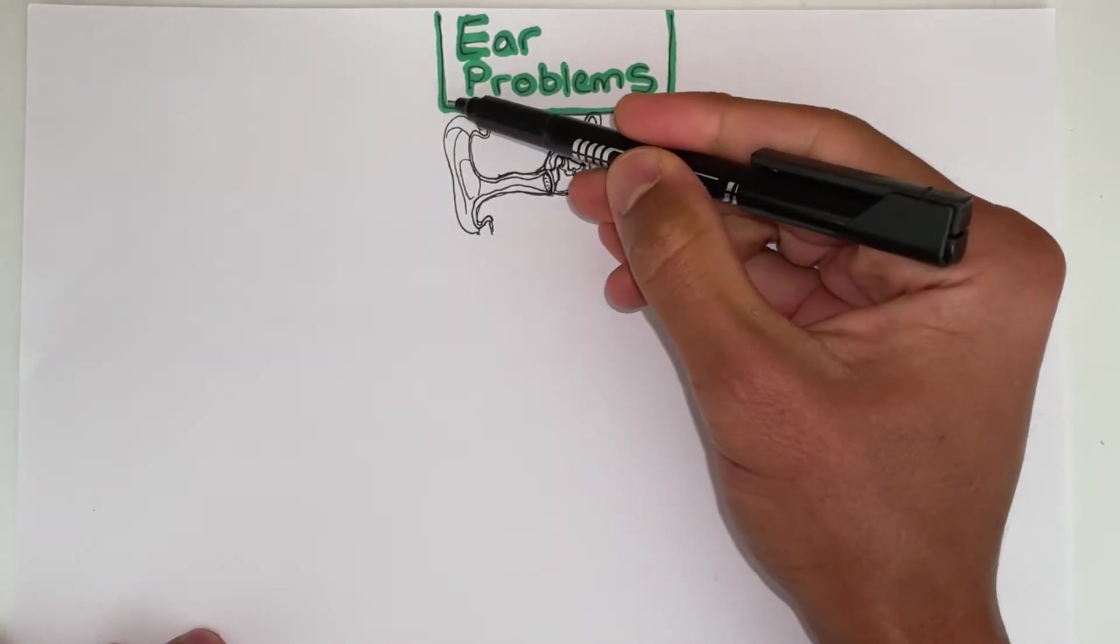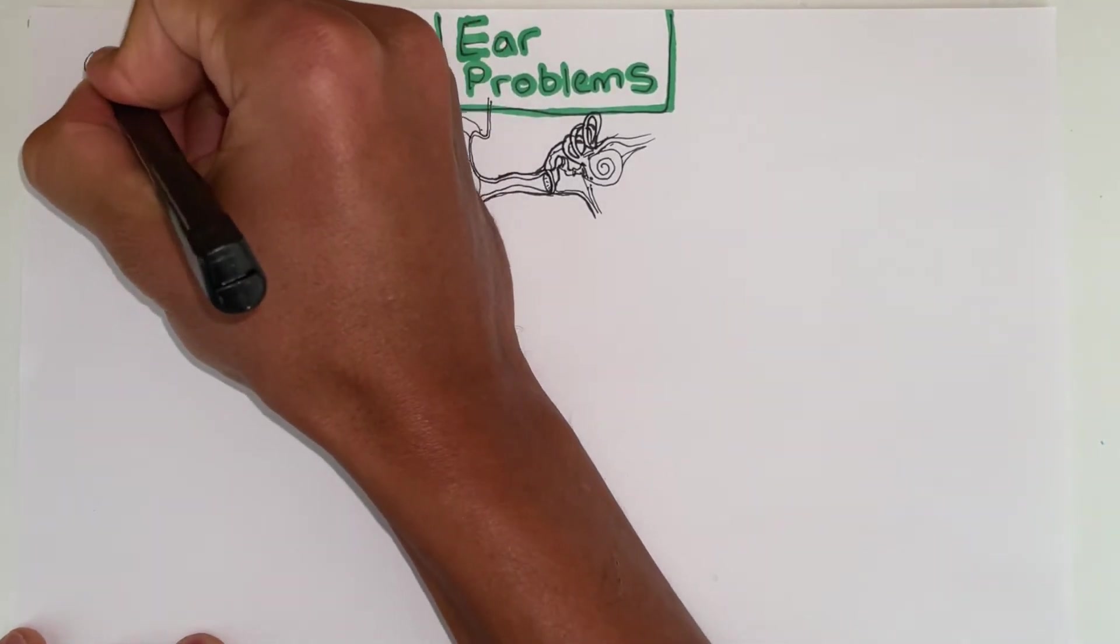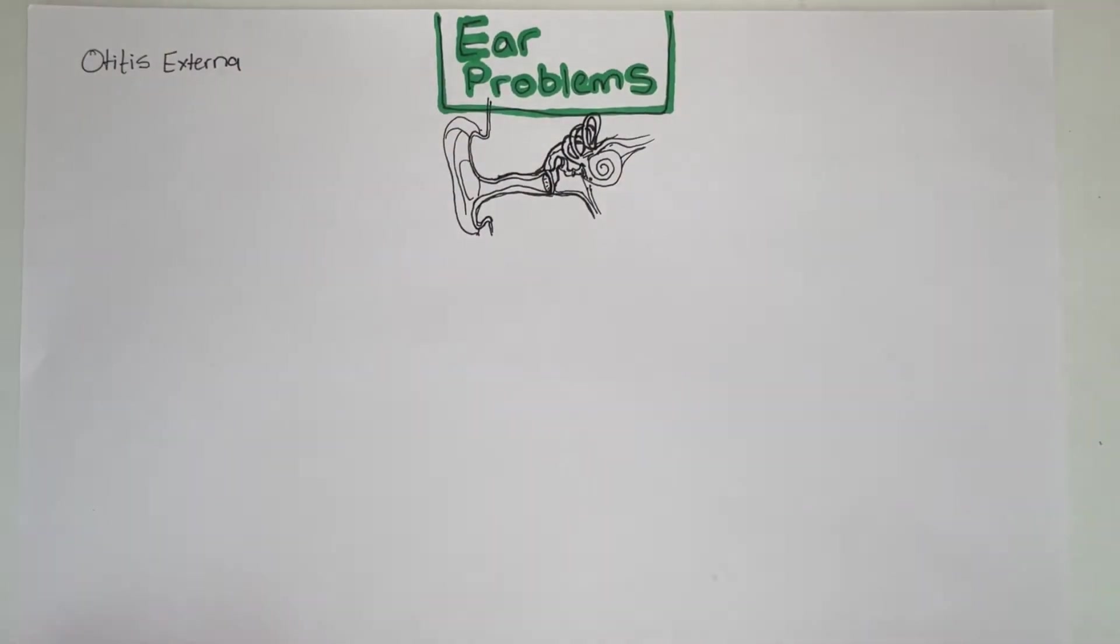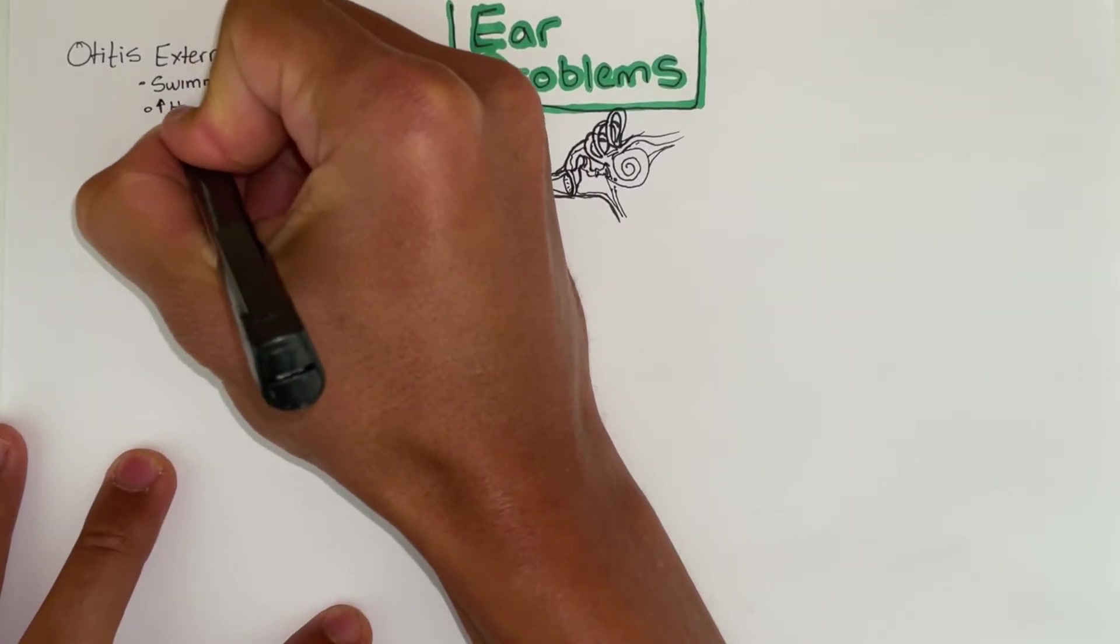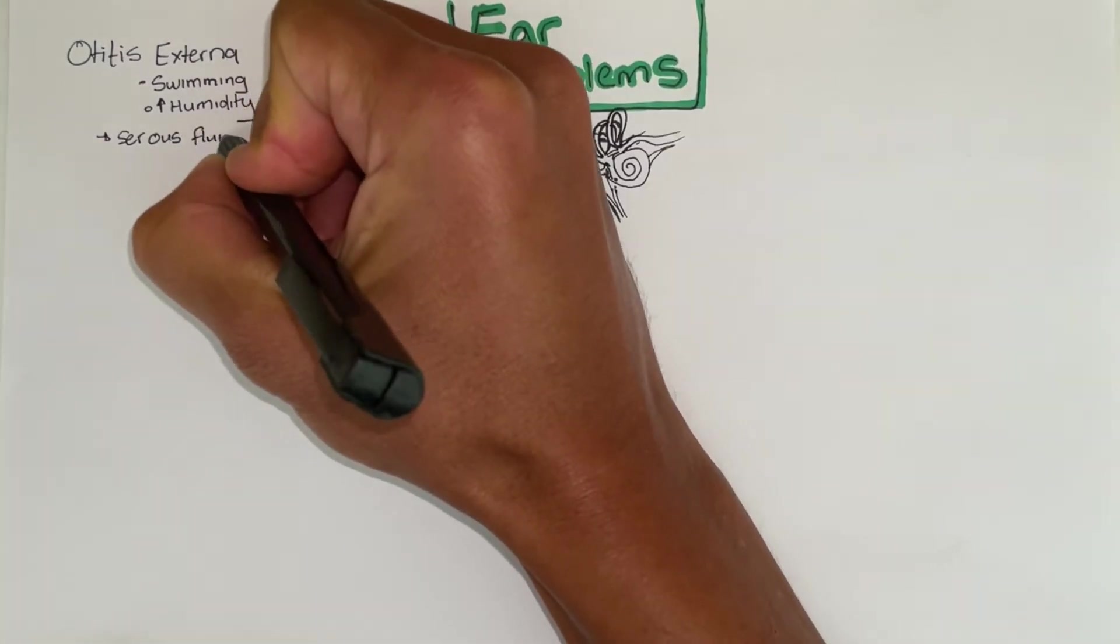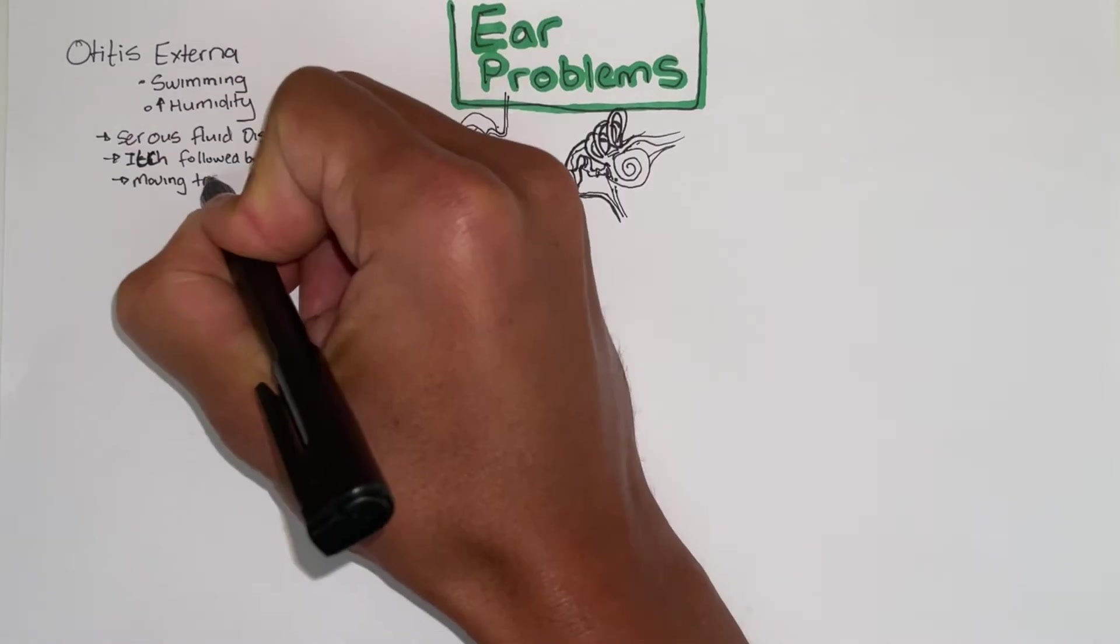In the external ear, firstly you can have an infection in the external ear. This is called otitis externa. This is common in patients who have a history of swimming or those in a humid environment. They have serous fluid discharge from the ear, an itch that is followed by pain and moving the earlobe causes pain.